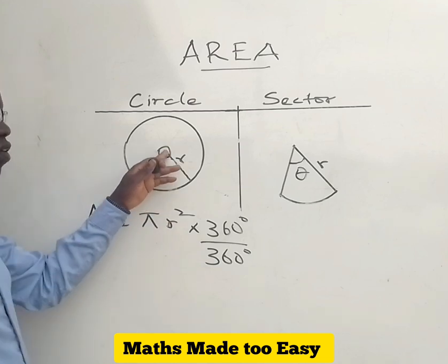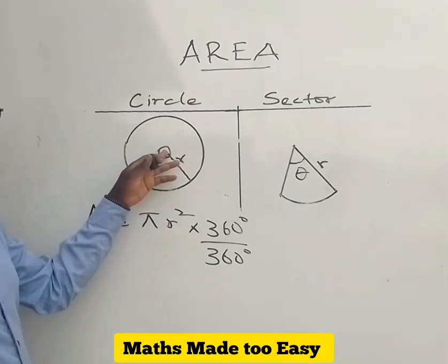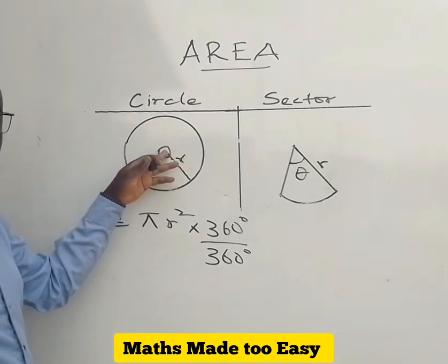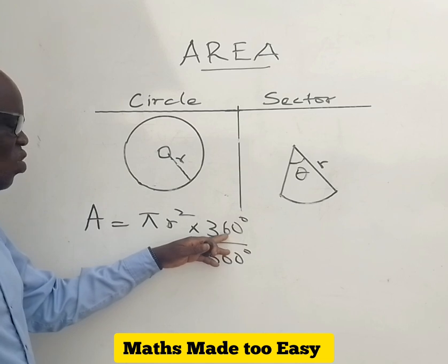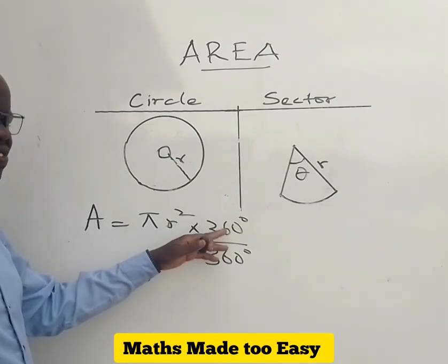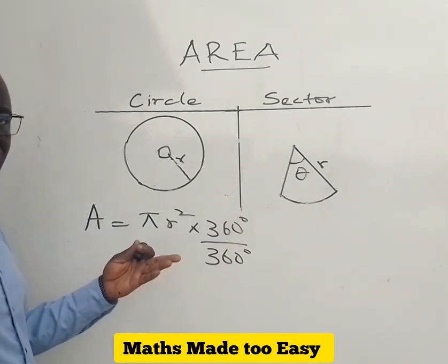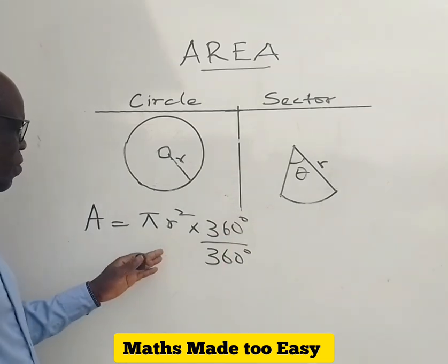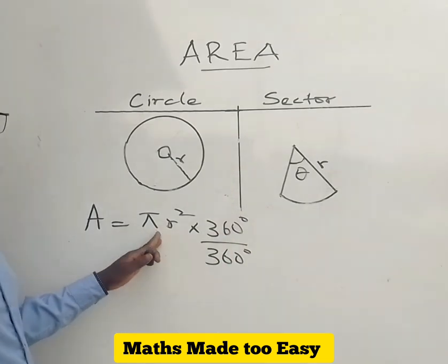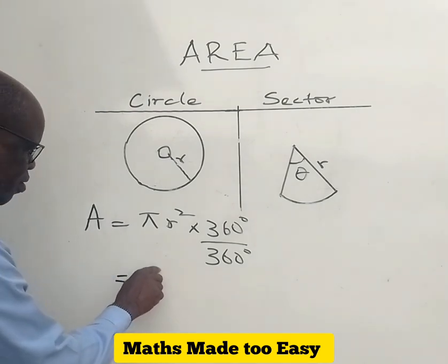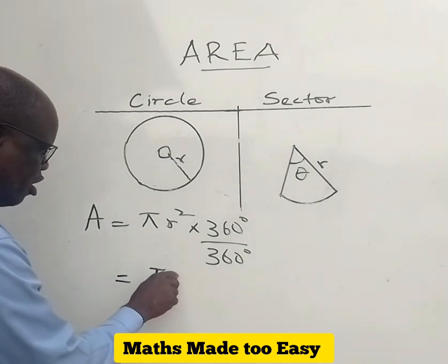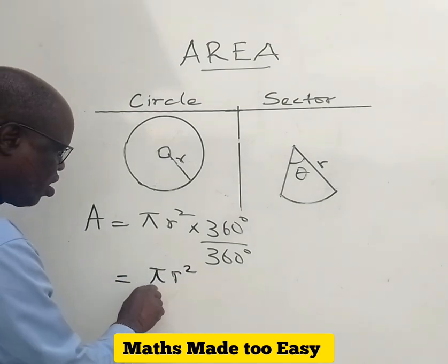360 because this is the angle at a point. Angle at a point is 360. So if you cut 360 over 360, that is 1. And 1 times pi r squared is the same thing as pi r squared.